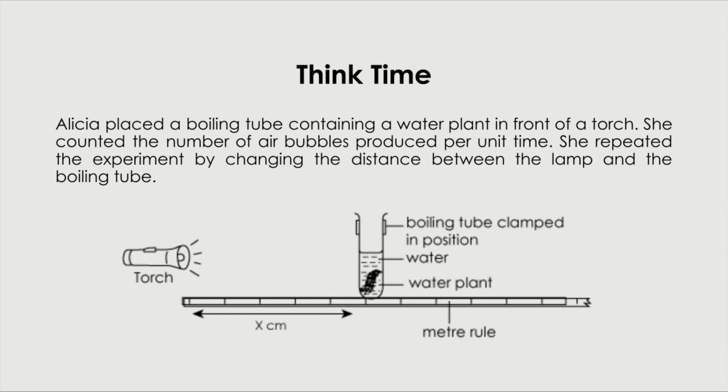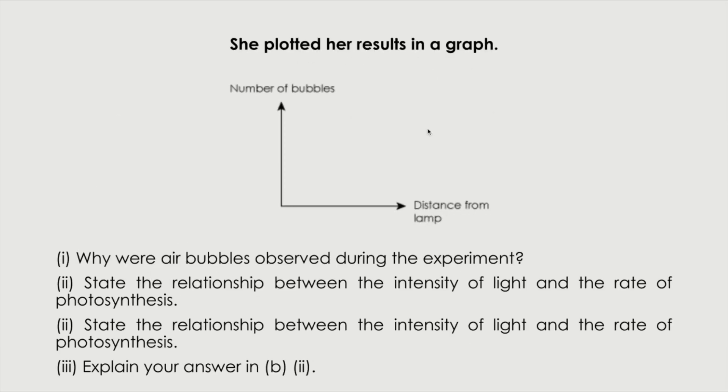Alicia placed a boiling tube containing a water plant in front of a torch. She counted the number of air bubbles produced per unit time. She repeated the experiment by changing the distance between the lamp and the boiling tube. The variable here is the distance. Before we proceed to the questions, what do you think the distance does in terms of rate of photosynthesis? Here, the distance actually correlates to the intensity of light. The closer the test tube or the boiling tube is to the torch, the more intense the light would be.